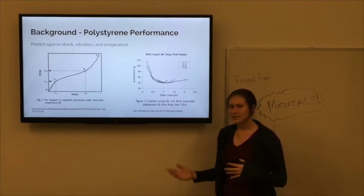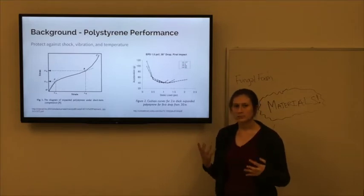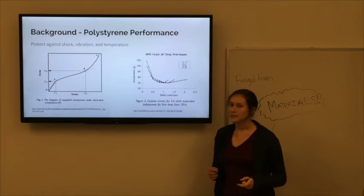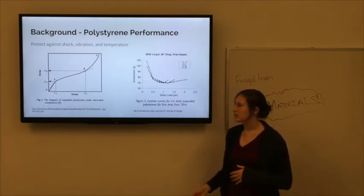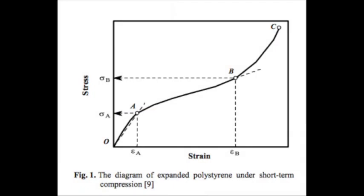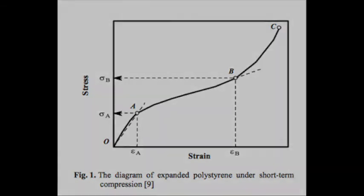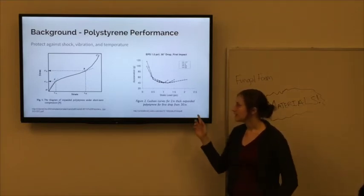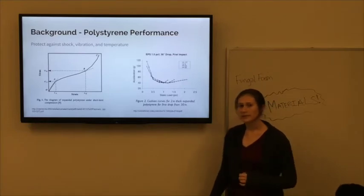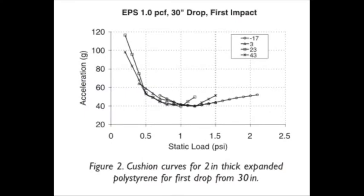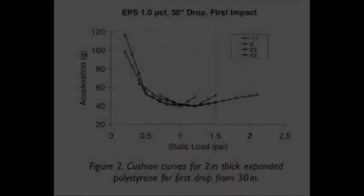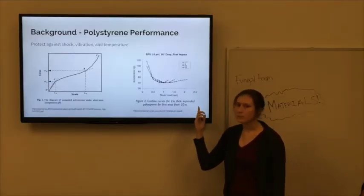So polystyrene, as used in packing materials, is typically used to cushion any item that it is holding. So it's important that it can protect against shock and vibration, especially under compressive loads, and it's also useful for it to be resistant to temperature changes. This first graph here is a stress-strain curve for polystyrene under compression. The first region up until point A is the linear region, where in the second region it diverges from that. And then once you pass point B, then the material has undergone irreversible deformation. This second graph here is a cushion curve, which is commonly used to evaluate packing materials on their ability to provide cushioning for whatever they're trying to protect. And this shows polystyrene at multiple temperatures and how it performs there.